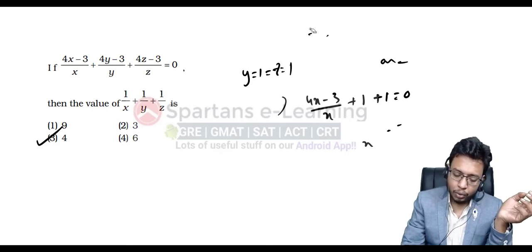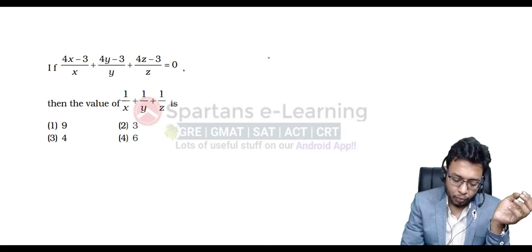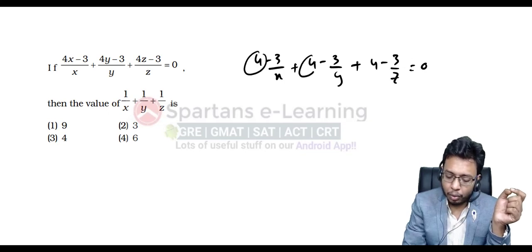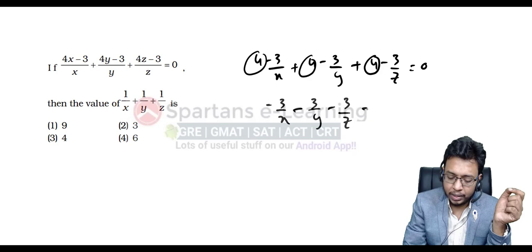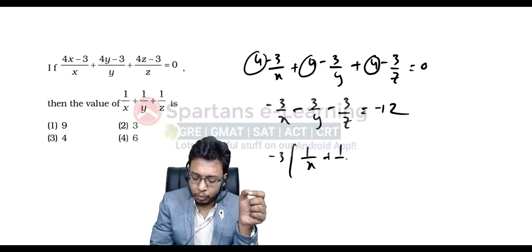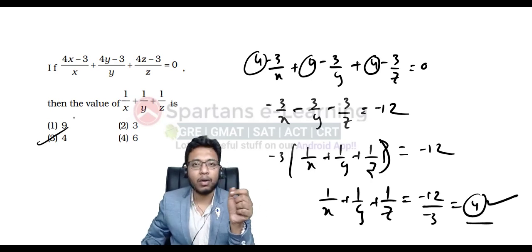Now let me show the traditional way for the same question. (4x − 3)/x = 4 − 3/x. So 4 − 3/x + 4 − 3/y + 4 − 3/z = 0. That gives 12 − 3/x − 3/y − 3/z = 0, so − 3(1/x + 1/y + 1/z) = −12, and therefore 1/x + 1/y + 1/z = 4. The same answer we got earlier.